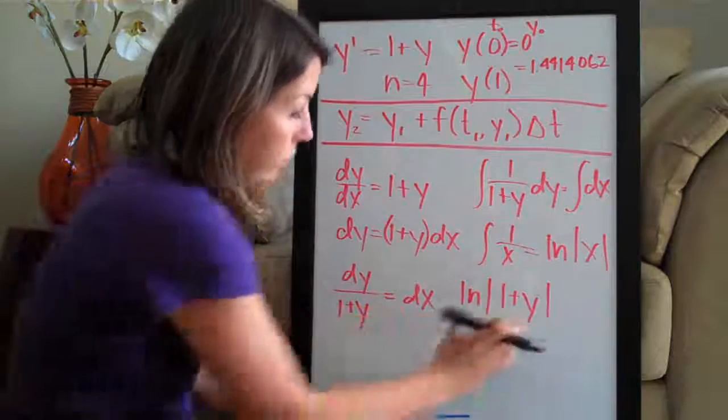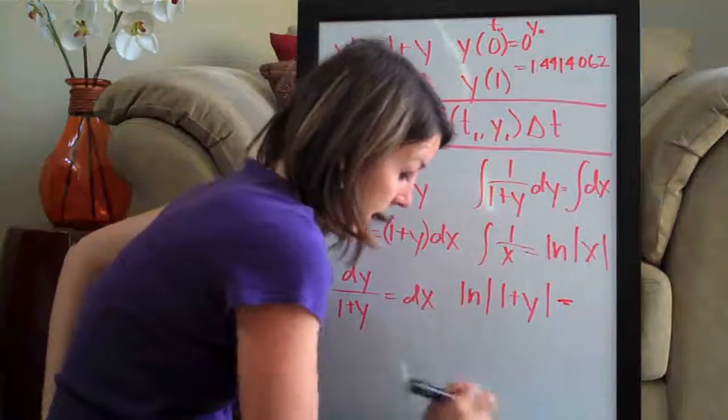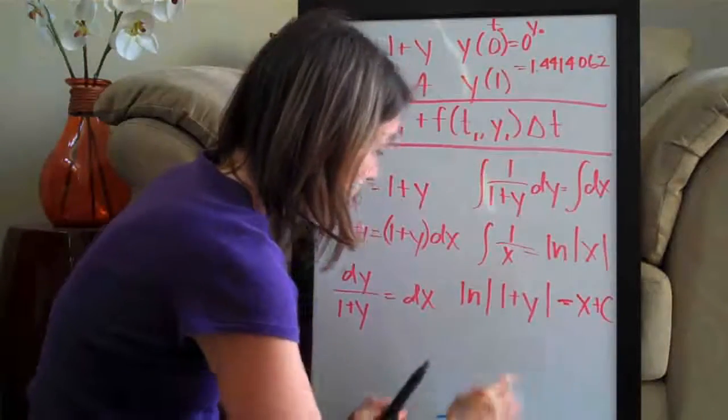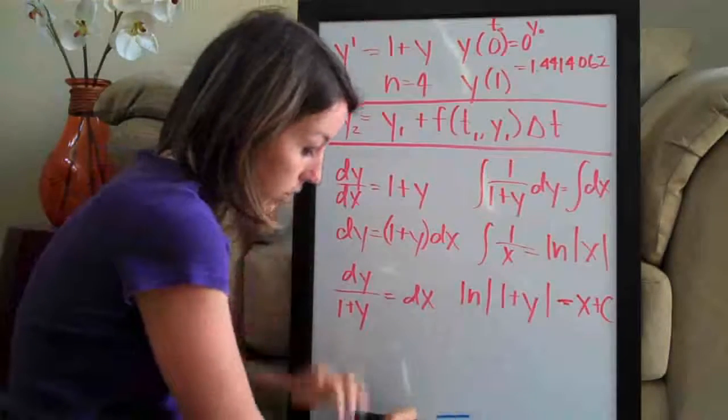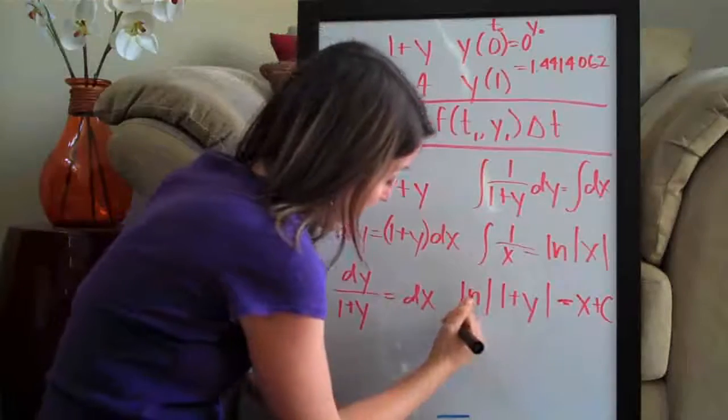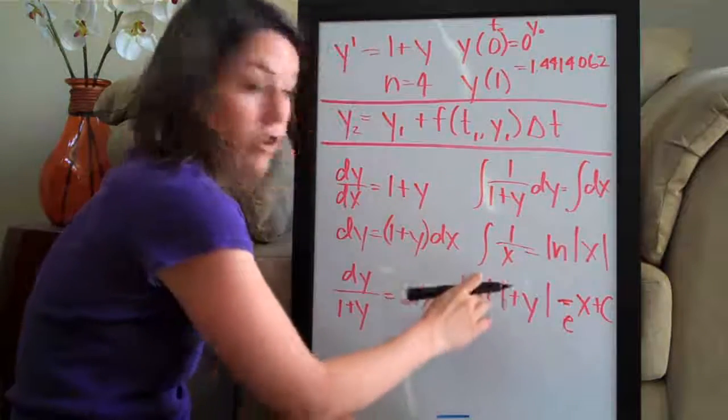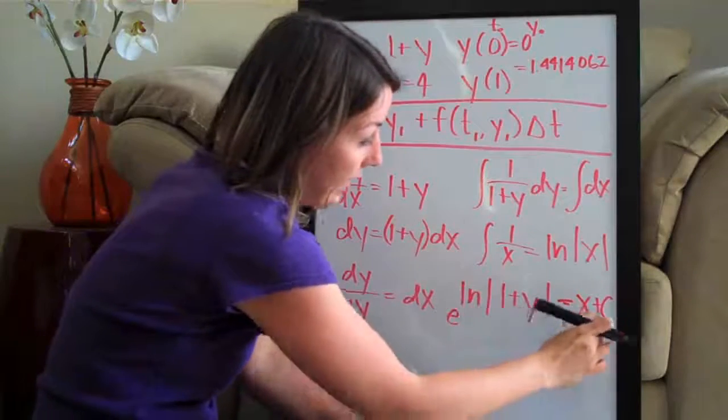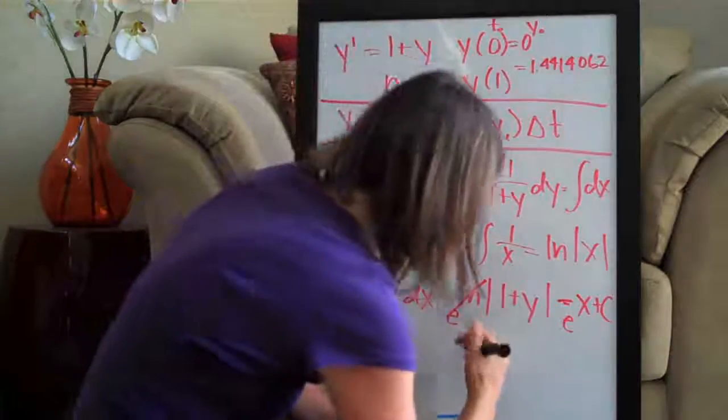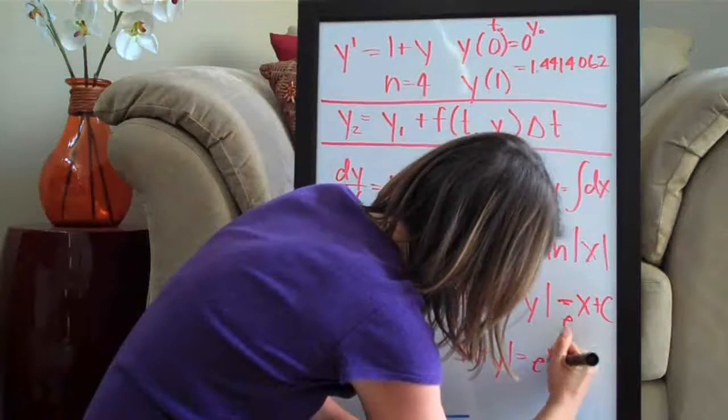So we have natural log of the absolute value, that's what these brackets mean here, of 1 plus y, and then on the other side, the integral of dx is of course just x, and then we have to add c to account for the constant. Now what we need to do is simplify this equation. We're hoping to solve for y. So the way that we do that, we want to get rid of this natural log. And the way that we do that is raising both sides to the base of e instead of to the power. So now this is e to the, and this becomes the exponent, natural log of the absolute value, and x plus c is the exponent on this side. And what that does is cancel this e and ln here. And we're just left with absolute value of 1 plus y equals e to the x plus c.